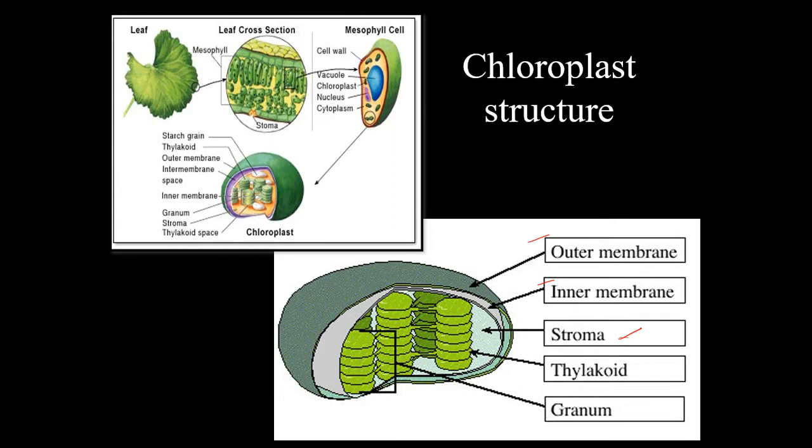Inside the inner membrane are a series of flattened interconnected sacs that look like pancakes stacked on top of each other called the granum. Each of those flattened sacs is called the thylakoid.